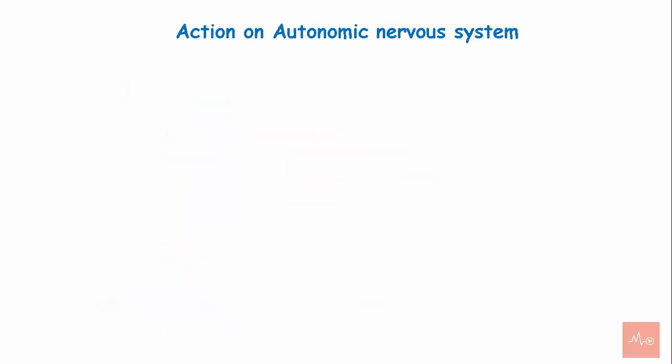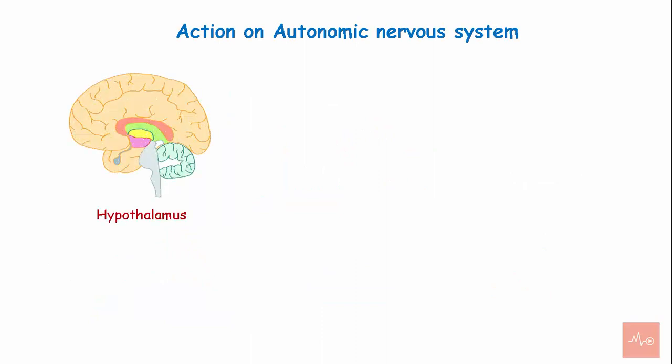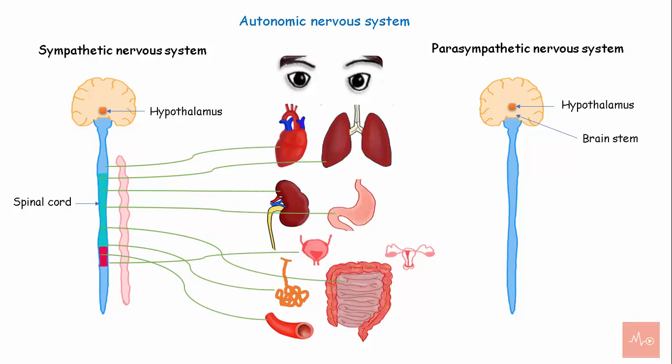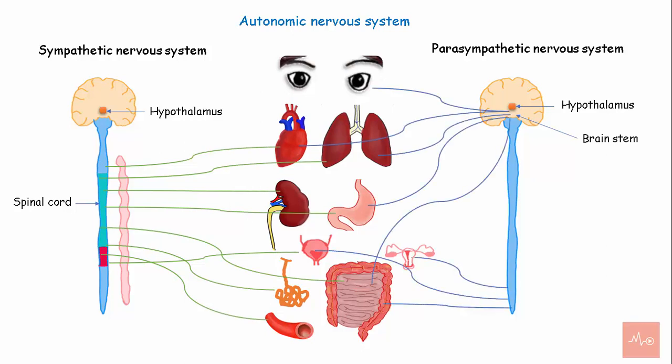Control over the autonomic nervous system. The hypothalamus has firm control over the functioning of the autonomic nervous system. The ANS has sympathetic and parasympathetic divisions that innervate visceral structures like smooth muscles, cardiac muscles, and glands, and are involved in functions performed unconsciously or involuntarily.